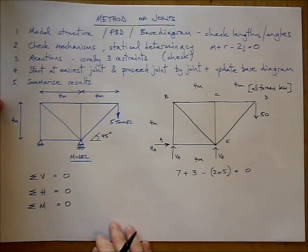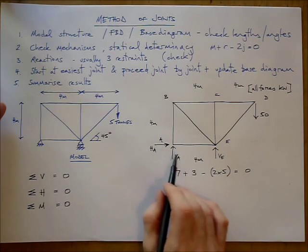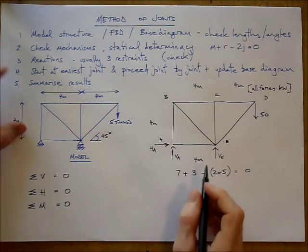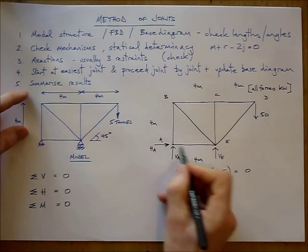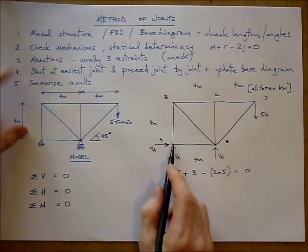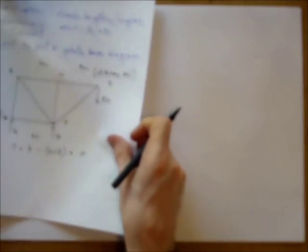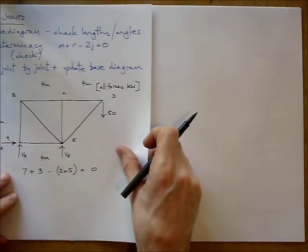So the first thing I want to do now is to calculate the reactions. I've got three restraint forces here. The way I'm going to do that is by taking moments about one of the two supports. Taking moments about A looks a good start. So that's what I'm going to do. Put this here. You can see what we're doing as we go along.